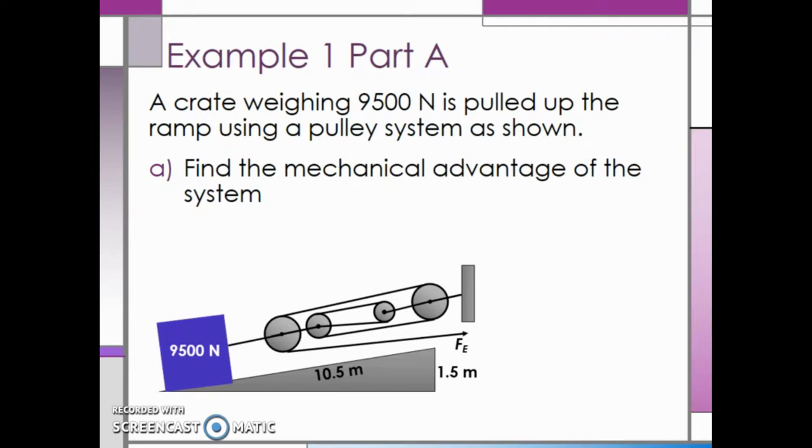Remember, the ideal mechanical advantage of a ramp is equal to the length of the ramp divided by the vertical height. The length of the ramp is 10.5 meters, and the vertical height the crate needs to travel is 1.5 meters. Dividing 10.5 by 1.5, we see that the ideal mechanical advantage of the ramp is 7.